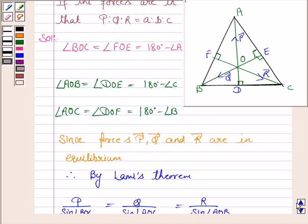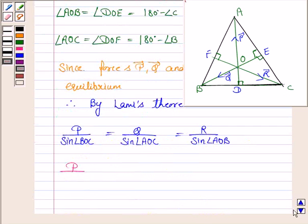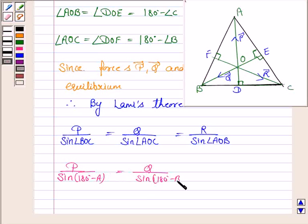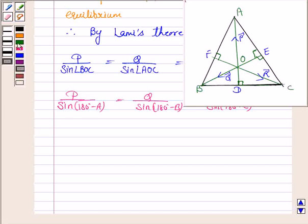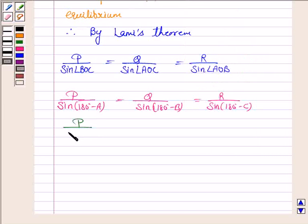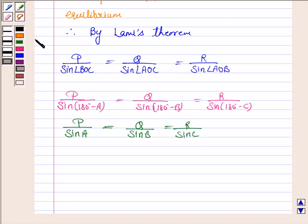Now, sine of BOC: since BOC is 180 degrees minus angle A, this gives P upon sine A. This is equal to Q upon sine of 180 degrees minus angle B, and R upon sine of angle AOB, which is 180 minus C. So we get P upon sine A is equal to Q upon sine B is equal to R upon sine C, since sine of (180 minus theta) equals sine theta.